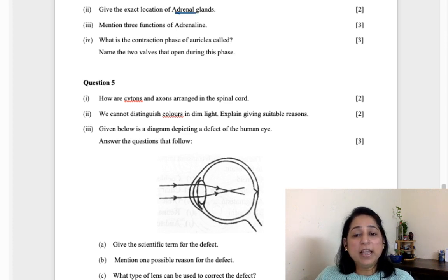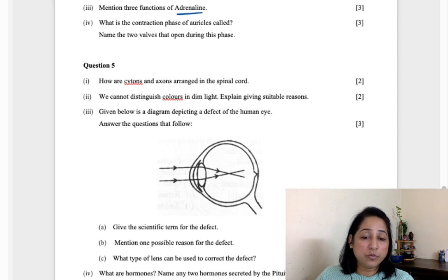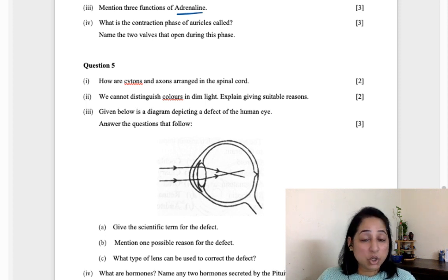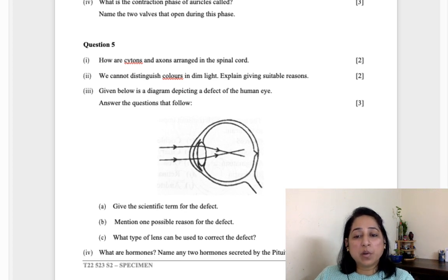Mention three functions of adrenaline. When you have to write three functions, write one, two, three. Adrenaline increases the heartbeat and allows you to face any fight or flight situation. Adrenaline enhances your blood circulatory level. Adrenaline also dilates your pupils. There are many changes which occur in your body, and yes one of course that it helps you to fight and flight the situation.